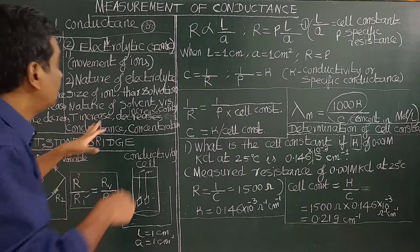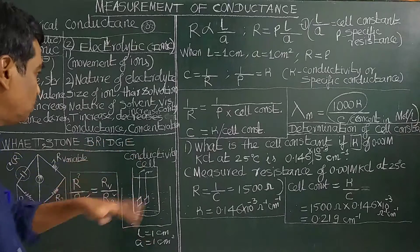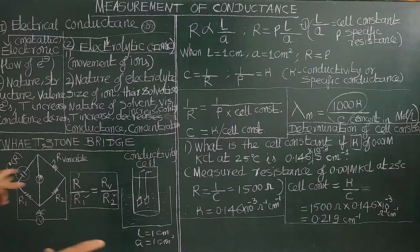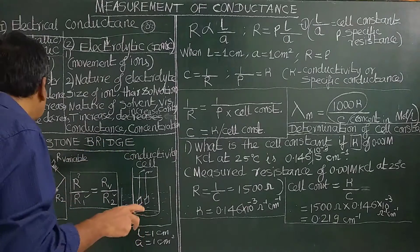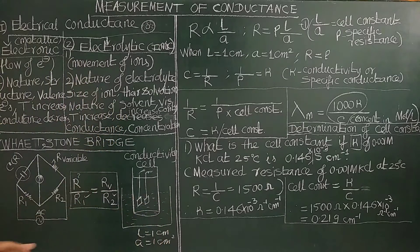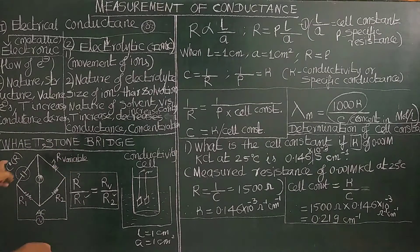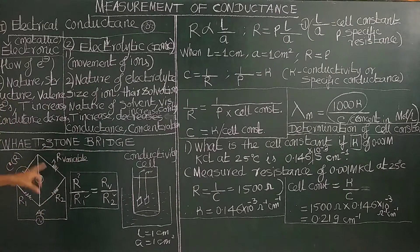How the conductance is measured — by using a Wheatstone bridge, the conductance or resistance of the electrolytic solution is measured. The setup of the Wheatstone bridge, which you have studied in your physics electricity chapter, consists of four resistances: R1, R2, R3, and R4.